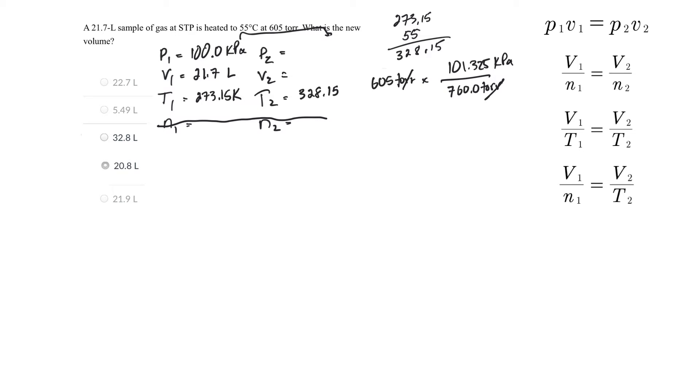So I think it's 760.0 torr is the same as 101.325 kilopascals. So those cancel. Let me multiply and divide that. So I get 605 times 101.325 divide 760. So in kilopascals, it's 80.6600 and that's kilopascals.